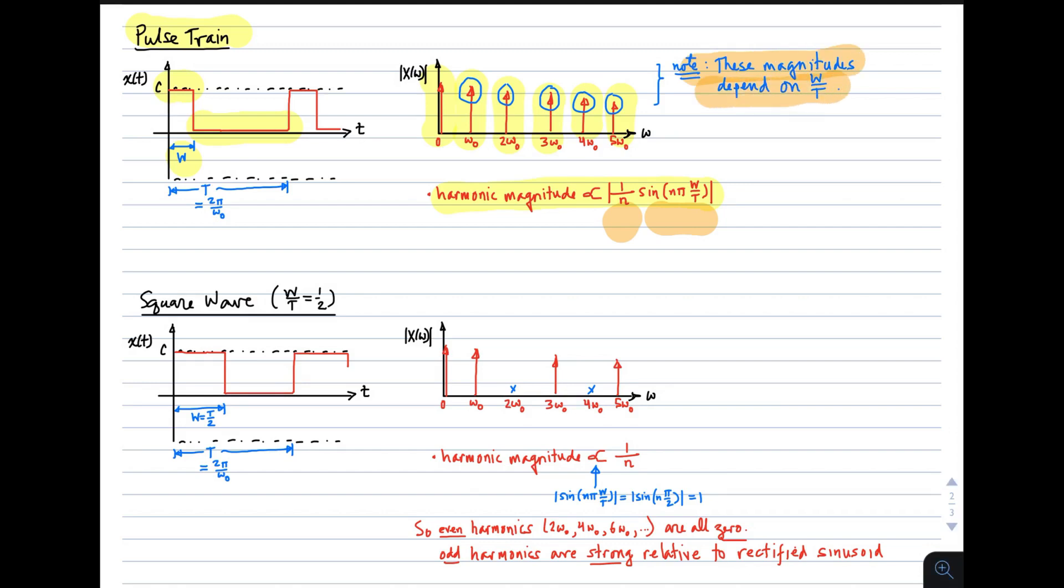If I set the duty cycle equal to 50%, that means w/T equals 1/2, then I get an ideal square wave. In that case, the spectrum now looks like this, where I've accounted for this sine factor in the harmonic magnitude. What we find is that we get DC, we get the fundamental. The second harmonic is missing. Third harmonic is there. Fourth harmonic is missing. Fifth harmonic is there. And the magnitude rolls off as 1/n, because that sine factor has magnitude 1.